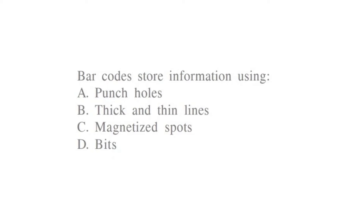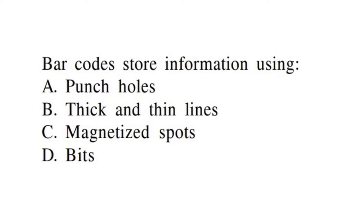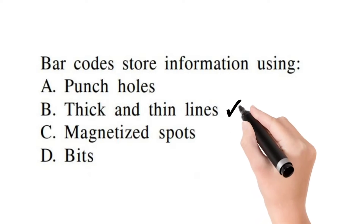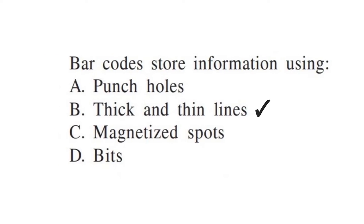A barcode stores a punched hole, magnetized strip, bits, and thin lines. The right answer will be thick and thin lines, because they are black and white — thick and thin lines, zebra-like lines.